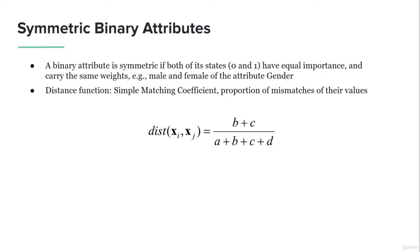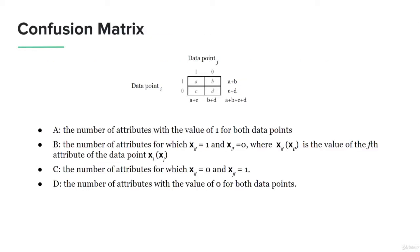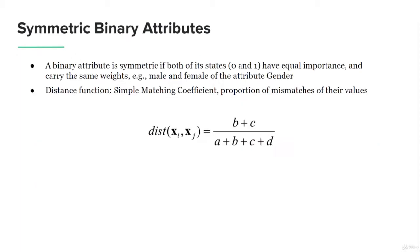There are two types of binary attributes to consider. For symmetric binary attributes, both states carry equal importance — for example, in gender, male and female have the same weight. When there is symmetry in binary attributes, we use the simple matching coefficient as the distance function. The formula uses the a, b, c, d values from the confusion matrix.